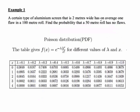In this case we're told that a certain type of aluminum screen is 2 meters wide and has on average one flaw in a 100 meter roll. Find the probability that a 50 meter roll has no flaws.